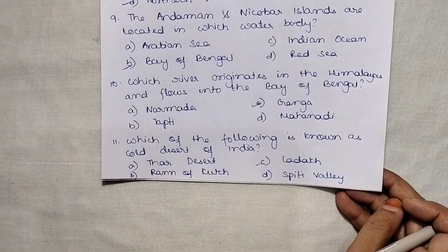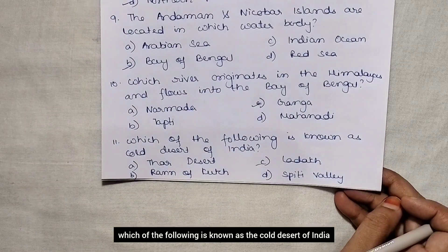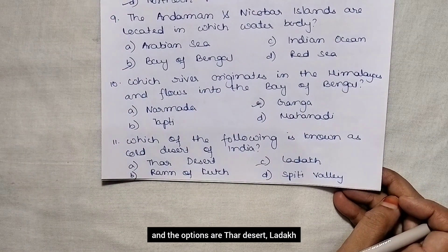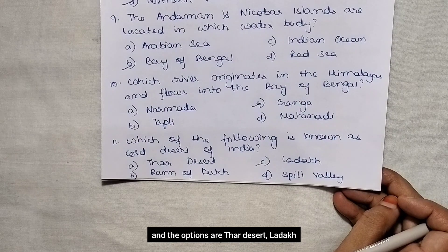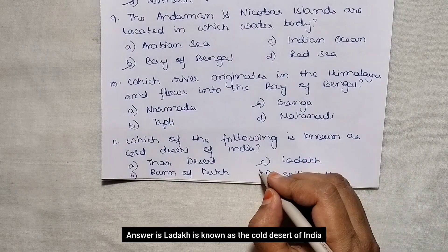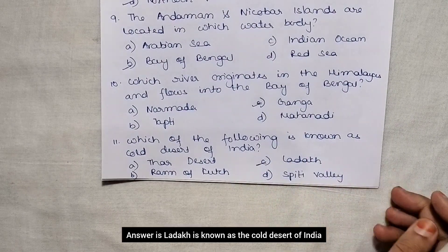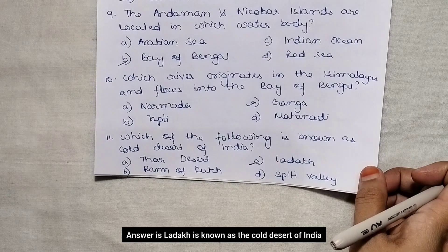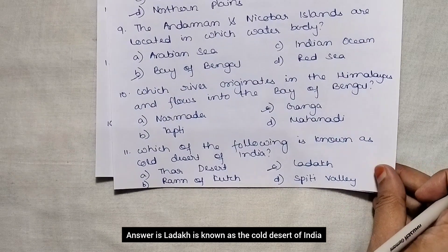Which of the following is known as the cold desert of India? The options are Thar Desert, Ladakh, Rann of Kutch, and Spiti Valley. Answer is Ladakh is known as the cold desert of India.